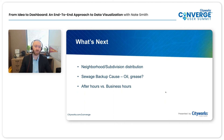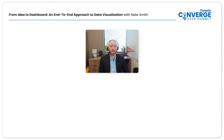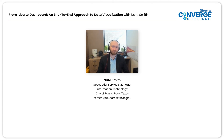What's next for this dashboard? After initial user acceptance testing, the director mentioned he'd like to view the distribution of service requests by neighborhood or subdivision — to see if we're servicing them at an equal rate and if some neighborhoods require more servicing than others. He'd also like to see what's causing sewer backups — namely, was it oil or grease? And he'd like the map to be filterable based on requests that came in during or after business hours.